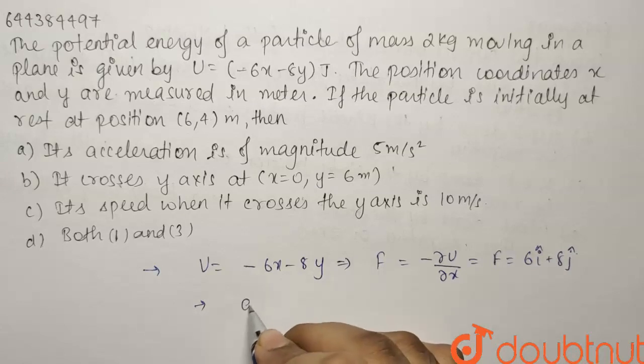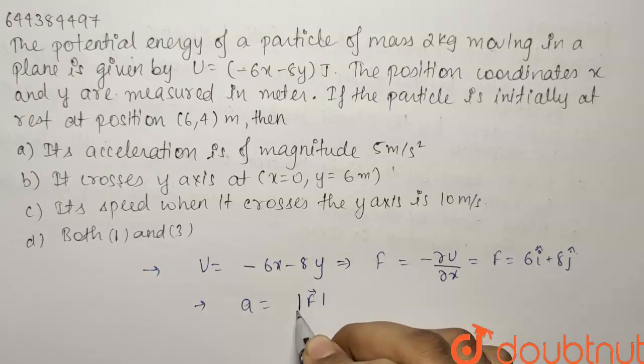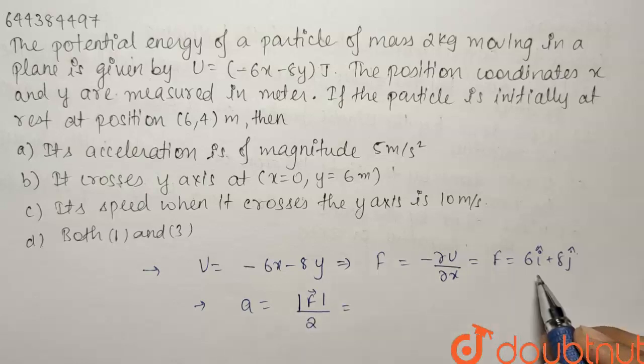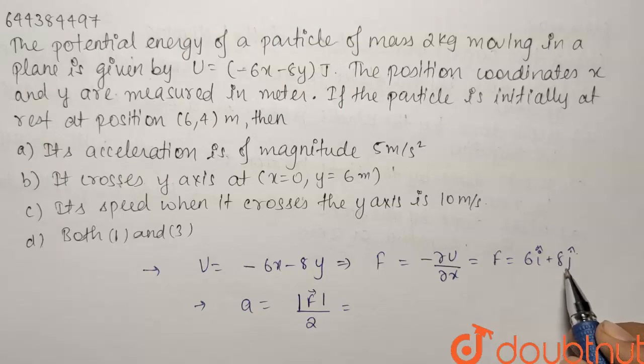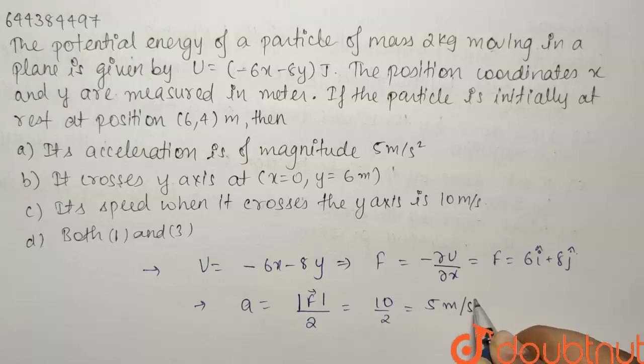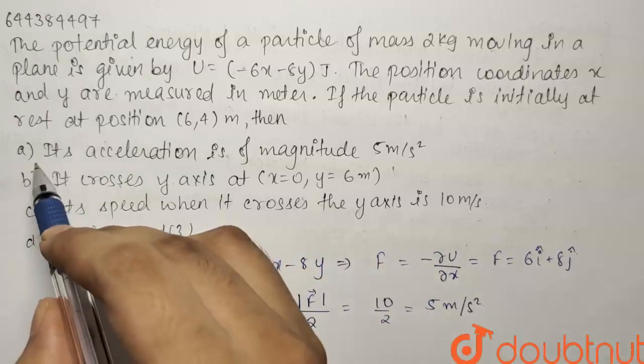The acceleration can be found out by a equals mod of F divided by the mass, that is 2 kg. So mod of F in this case will be square root of 36 plus 64, that will be 10 by 2. So our acceleration comes out as 5 meter per second squared and this is what our first option says.